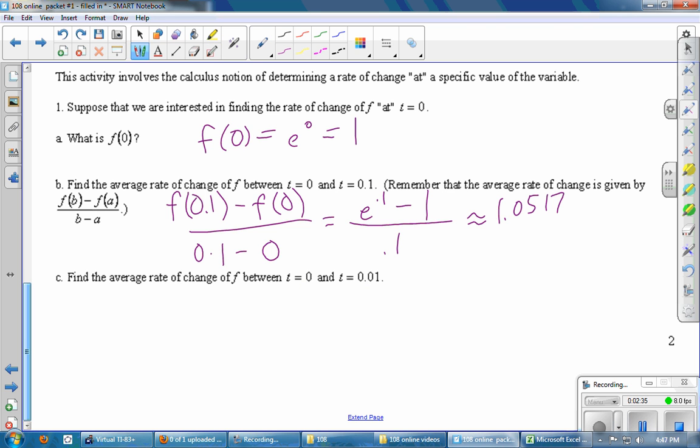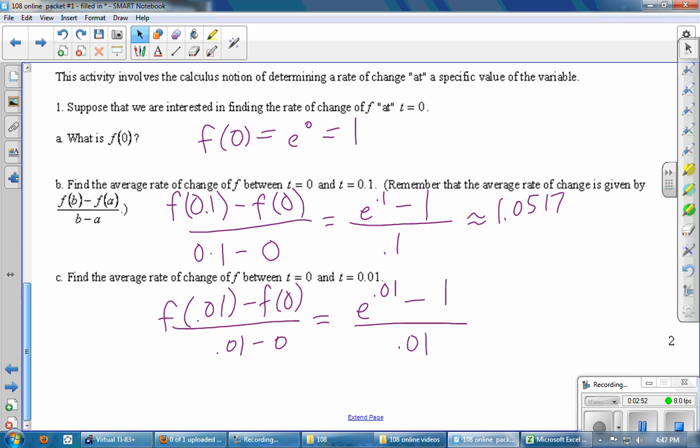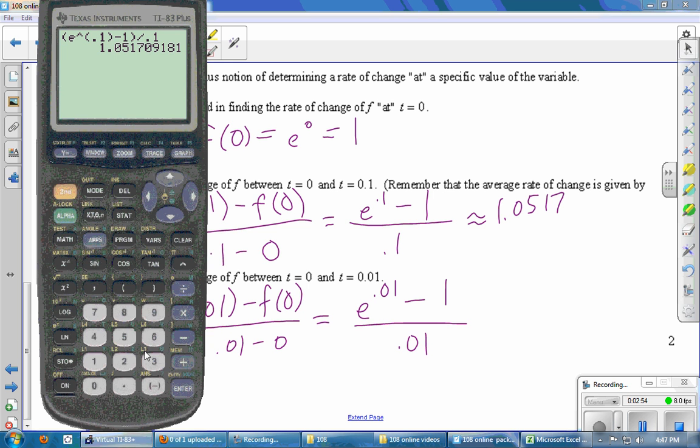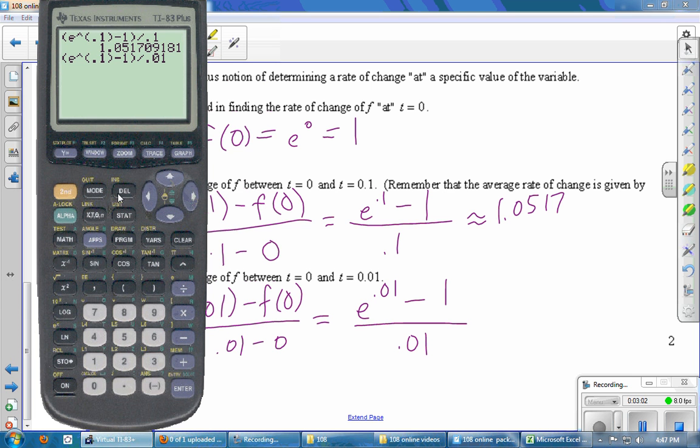We're just going to keep squeezing in on t equals 0. Same formula, f of b minus f of a. So this is now f of 0.01 minus f of 0, divided by 0.01 minus 0. So that's e to the 0.01, f of 0 is still 1, downstairs is 0.01. We can come back to the calculator. I'll do second entry and try to save some typing. So we need a 0.01 there, and we need a 0.01 here. So 1.005.